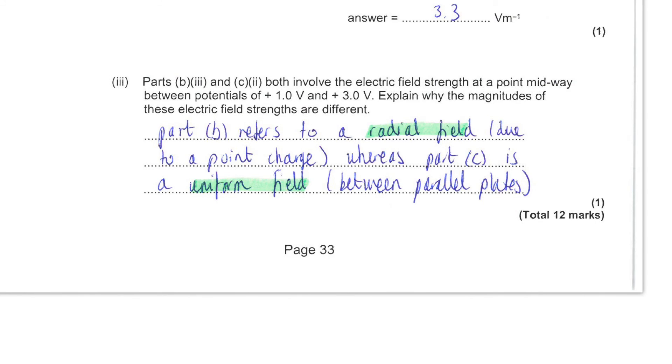Finally, you are told that parts B3 and C2 both involve the electric field strength at a point midway between potentials of 1 and 3 volts. However, you are asked to explain why the magnitudes of these two electric field strengths that you have already calculated are in fact different. This is quite a simple point.